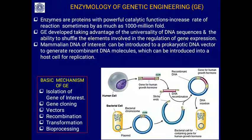Genetic engineering developed because there is universality in DNA processes — DNA structure, genetic code, and related processes. We can manipulate DNA of different organisms by cutting, isolating, and pasting. Mammalian DNA of interest can be introduced into a prokaryotic DNA vector to generate recombinant DNA molecules, which can be introduced into the host cell for replication.